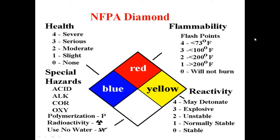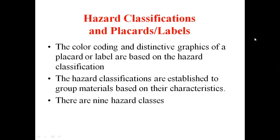Now let's talk about chemical classification, also called hazard classification. The color coding and distinctive graphics of the placard are based on hazard classification. Hazard classifications are established to group chemicals based on their characteristics. There are nine hazard classes.